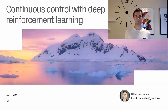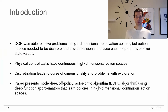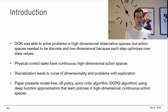The paper for today is called 'Continuous Control with Deep Reinforcement Learning' and it provides a framework that's an extension of some of the theory discussed in preceding videos. Specifically, DQN was a model we discussed prior to this video, and it was able to solve problems in a high-dimensional observation space. However, with that paper it was acknowledged that action spaces needed to be discrete and low-dimensional because each step optimizes over state values.